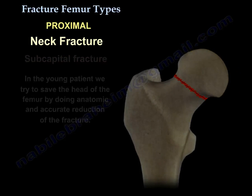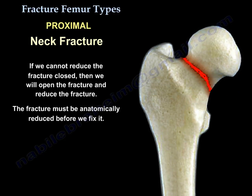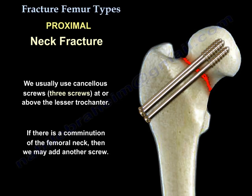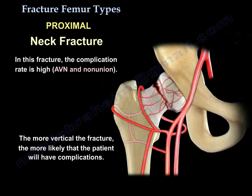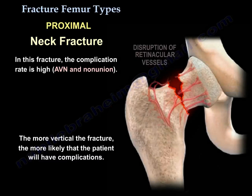If we can't reduce the fracture closed, then we open and reduce it. The fracture must be anatomically reduced before we fix it. We usually use three cancellous screws at or above the lesser trochanter. If there is comminution of the femoral neck, we may add another one.